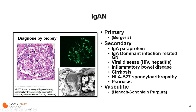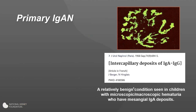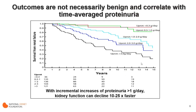IgA can also come in a vasculitic form, which we designate Henoch-Schönlein purpura. We will not be discussing secondary or vasculitic forms; we're focusing on primary IgA nephropathy. Primary IgA nephropathy was first reported by French investigators Berger and Hinglais in the Journal of Urology and Nephrology in 1968. It was described as a relatively benign condition seen in children with microscopic or macroscopic hematuria who had mesangial IgA deposits on renal biopsy. But now we know the outcomes are not necessarily benign, and they correlate with time-averaged proteinuria.